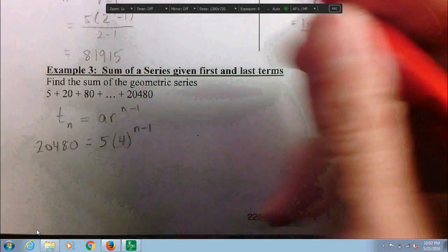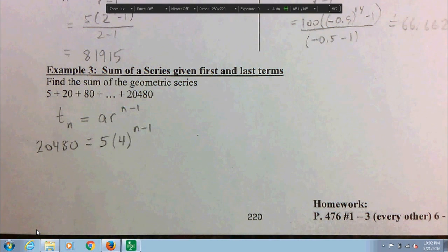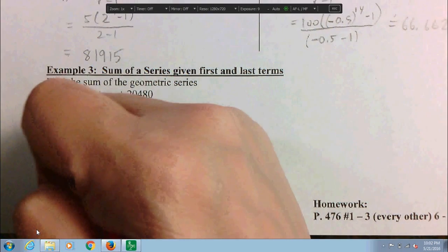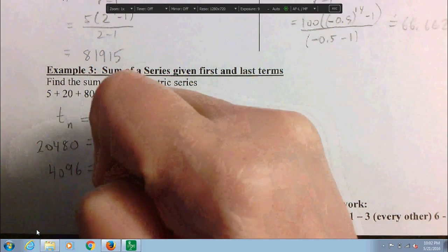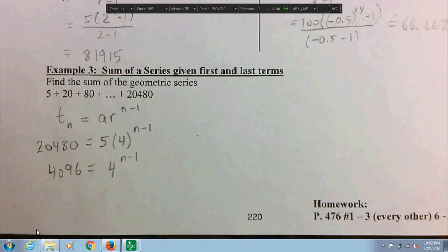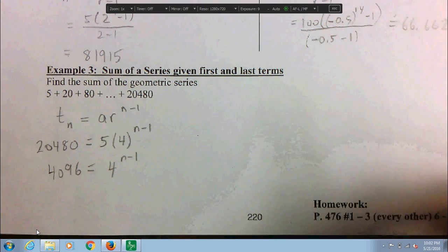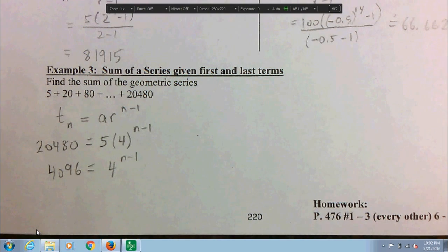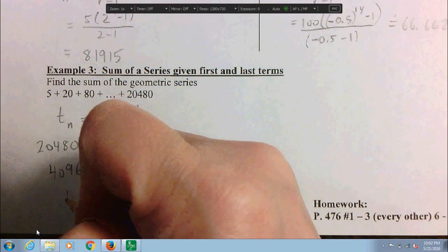Go ahead and solve for n. How do we do that? Let's think. Can we multiply 5 times 4? Absolutely not, because the 4 is raised to an exponent. So what we must do is divide both sides by 5. So 20,480 divided by 5 is 4,096. And isn't that convenient, because 4,096 just happens to be a power of 4. So go ahead, use your trial and error and figure out 4 to the what is 4,096.